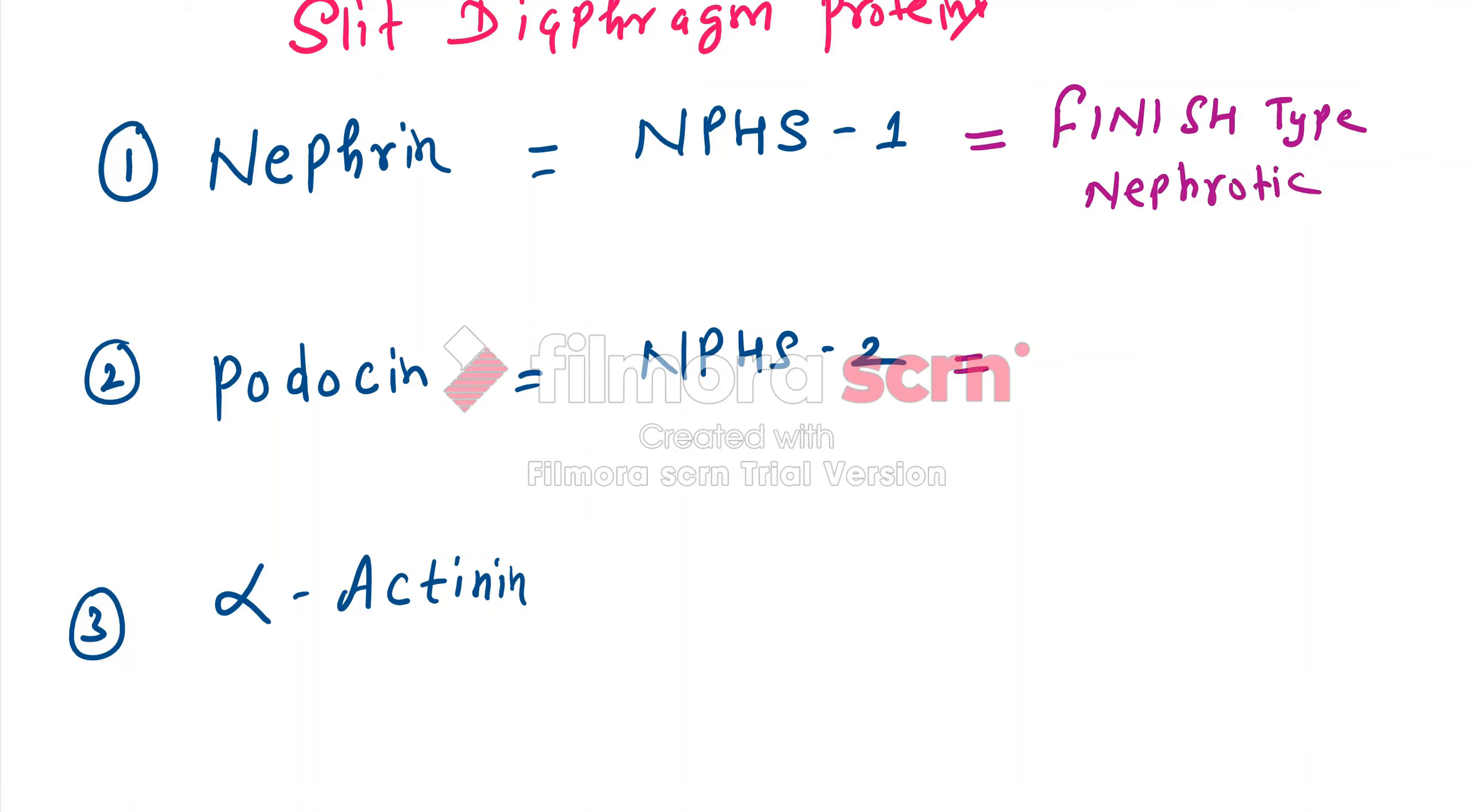If there is mutation in NPHS2 or podocin, it will lead to steroid-resistant nephrotic syndrome.